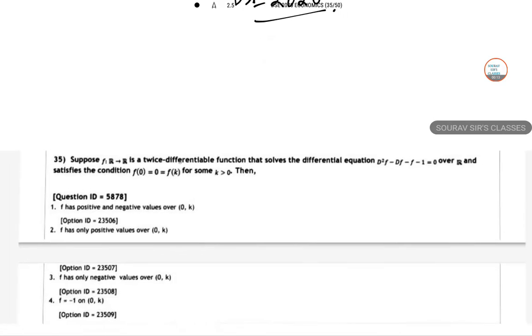Suppose that f(r) is a twice differentiable function that solves the differential equation d²f - df - f = 1/r and satisfies the condition f(0) = fk.